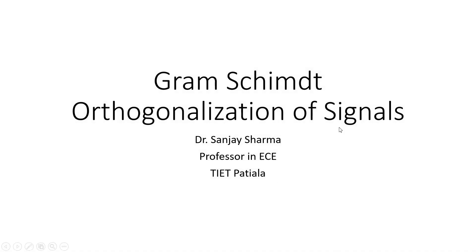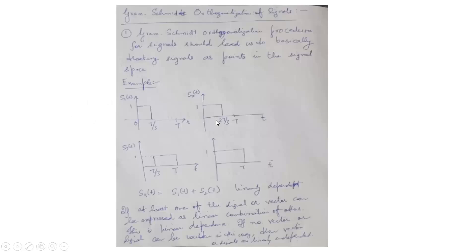Hello everyone, let us now talk about the Gram-Schmidt Orthogonalization of signals. The Gram-Schmidt Orthogonalization procedure for signals should lead us to treating signals as points in the signal space. We want to treat these signals as vectors, and in the vector space these signals can be represented as coordinates. That is the actual procedure whereby we apply Gram-Schmidt Orthogonalization so that we can treat these signals as signal points.